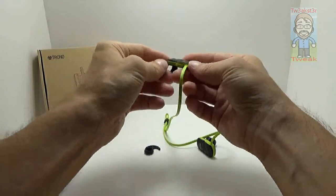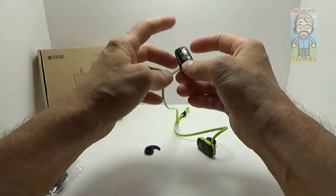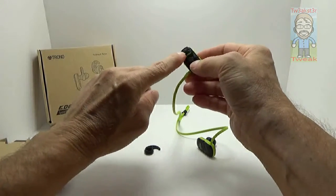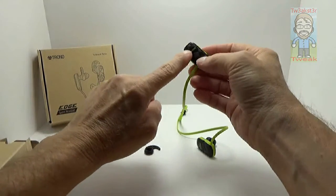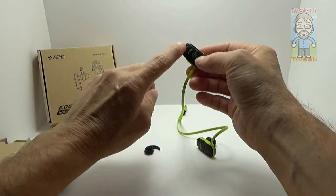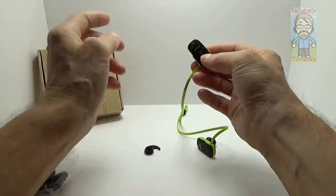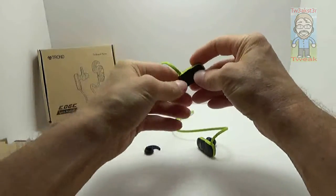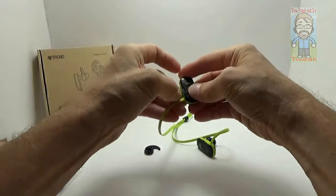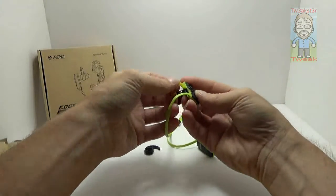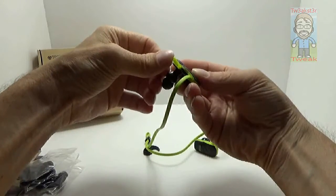You have a small indicator right in the center that you'll see whenever you're using these, turning them on and off, pairing and whatnot. And you have your little charging port right on the side right there.